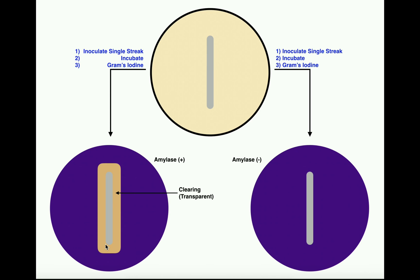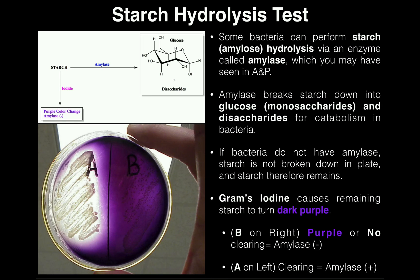That's pretty much all there is to the starch hydrolysis test. When you learn this, you're going to be focusing on the results mainly. The result is: if you have clearing, that's the key — clearing — you have an amylase positive organism. If you do not have clearing, you have an amylase negative organism. And remember, amylase is just the enzyme that breaks down starch, also called amylose, into monosaccharides and disaccharides.